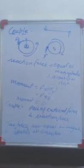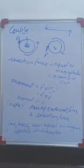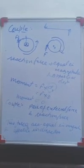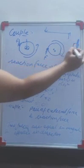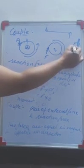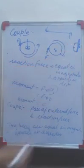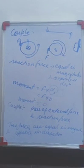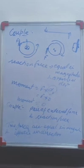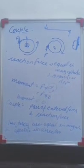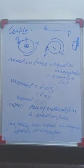A couple is always needed to produce a rotational motion. For example, when you open a door fixed at a hinge, one force you apply causes the motion and another reaction force is at the hinge itself. Similarly, when you open a fridge, one force acts at the door and another reaction force is on the hinge. So there is always a couple of forces involved.